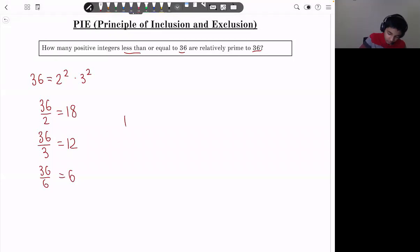So there are 18 plus 12 multiples of 2 and 3, but then we're overcounting the multiples of 2 and 3. Since the multiples of 2 and 3 are counted when counting the number of multiples of 2, and counted when counting the number of multiples of 3. So we subtract 6, we get 24. So the number of numbers less than 36, which is 36 minus 24, which is 12.